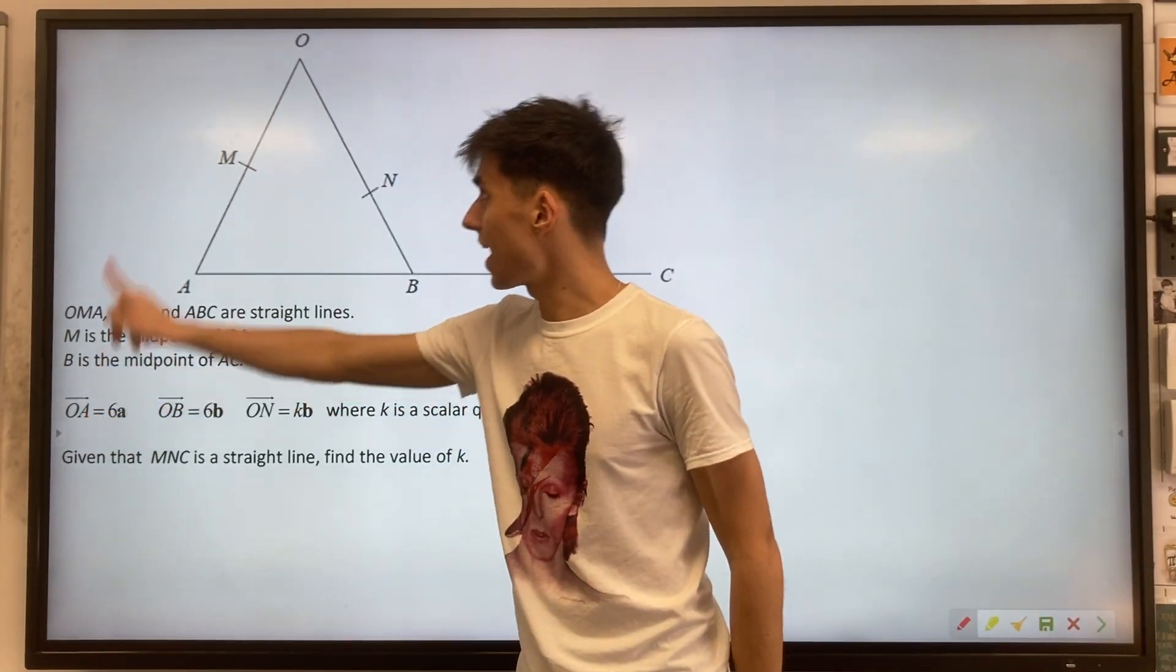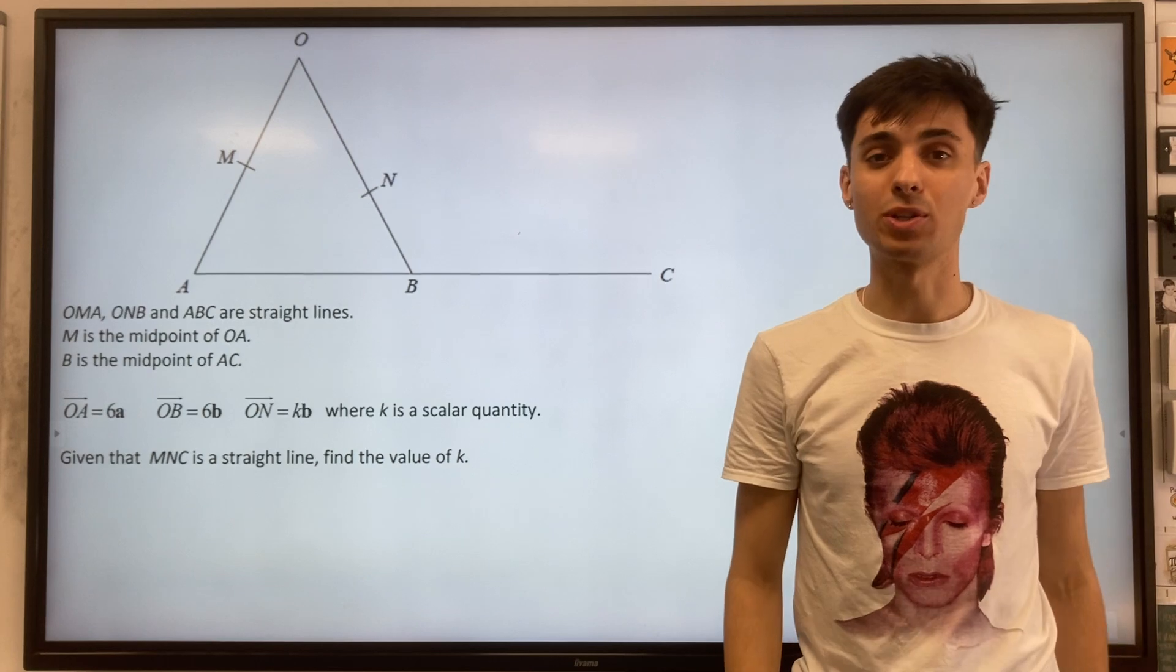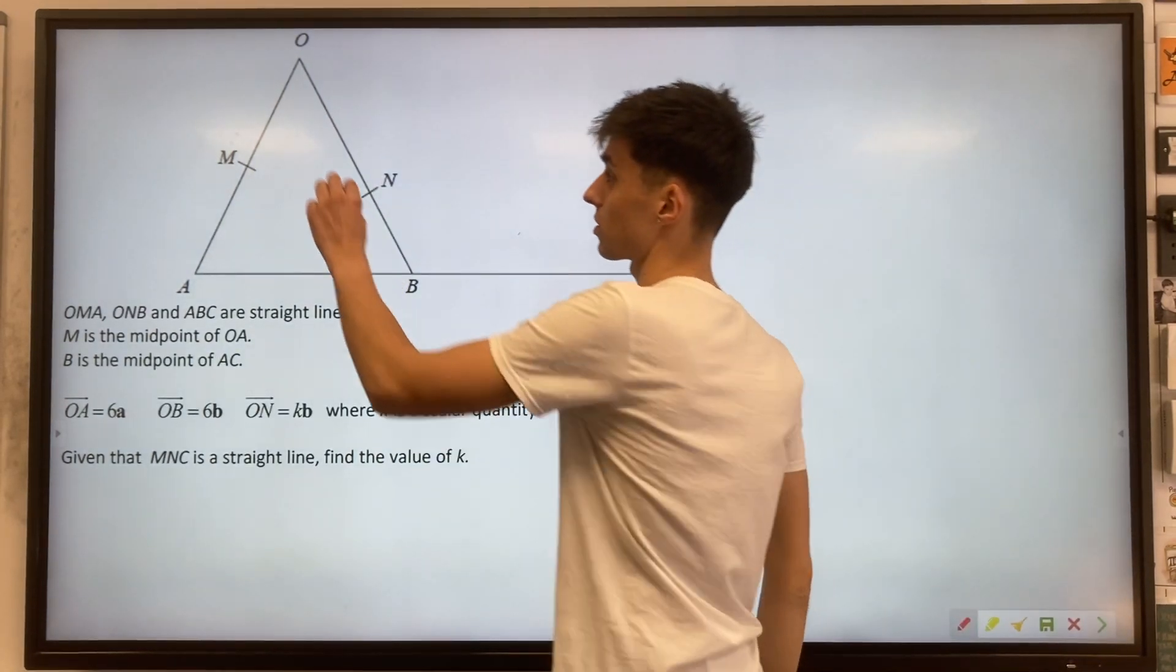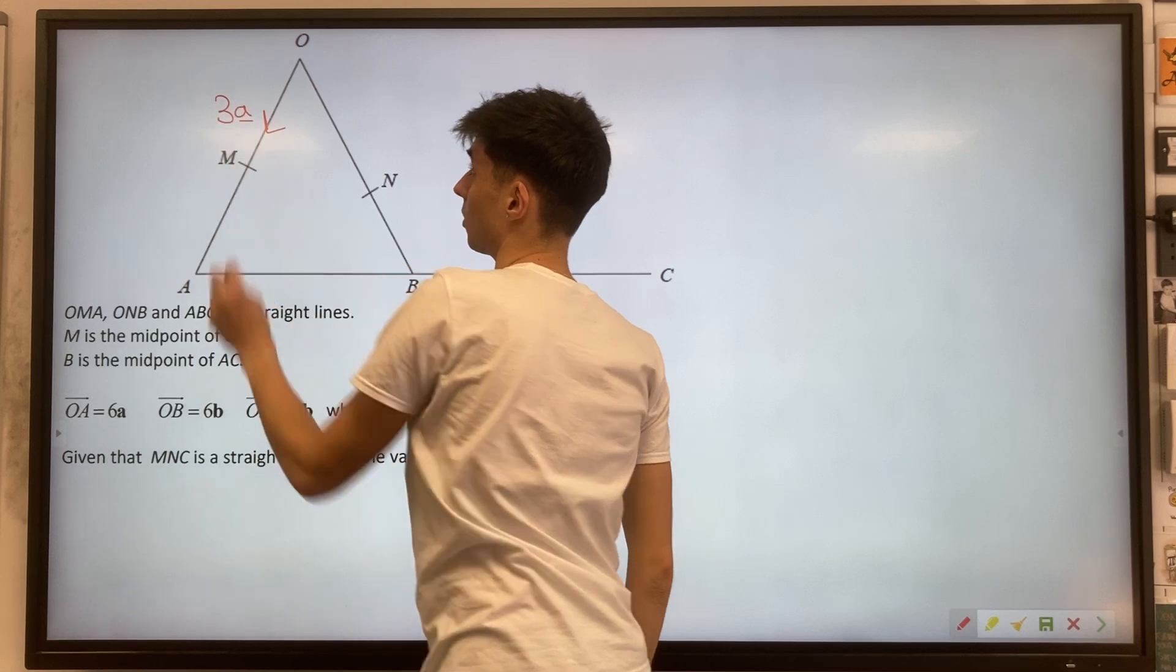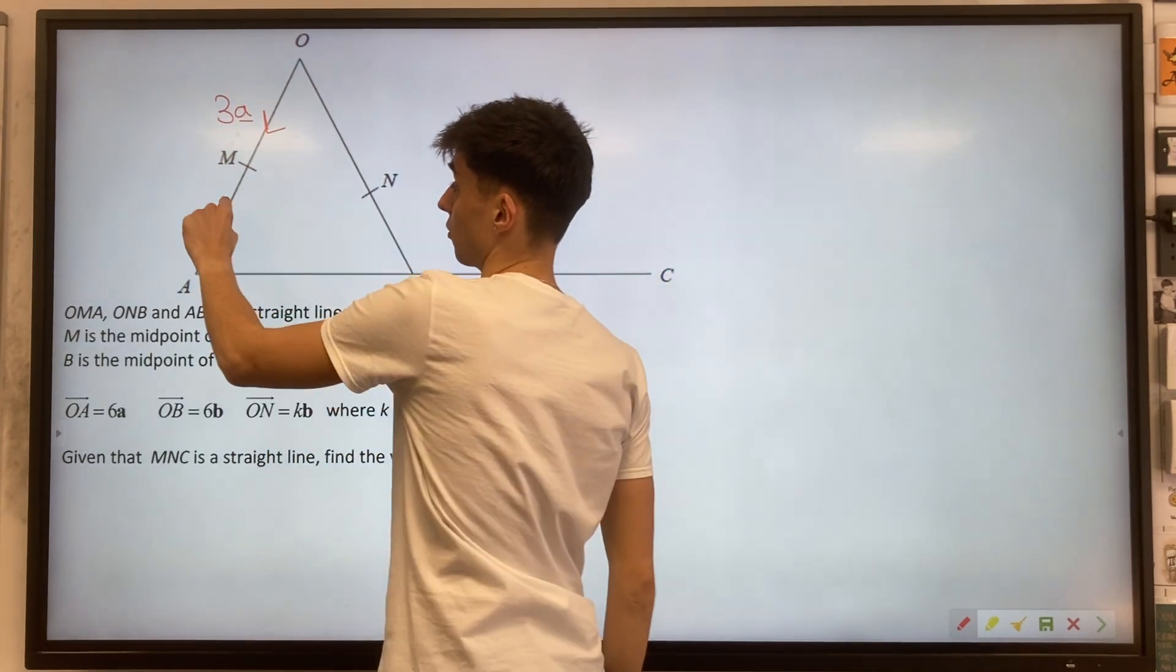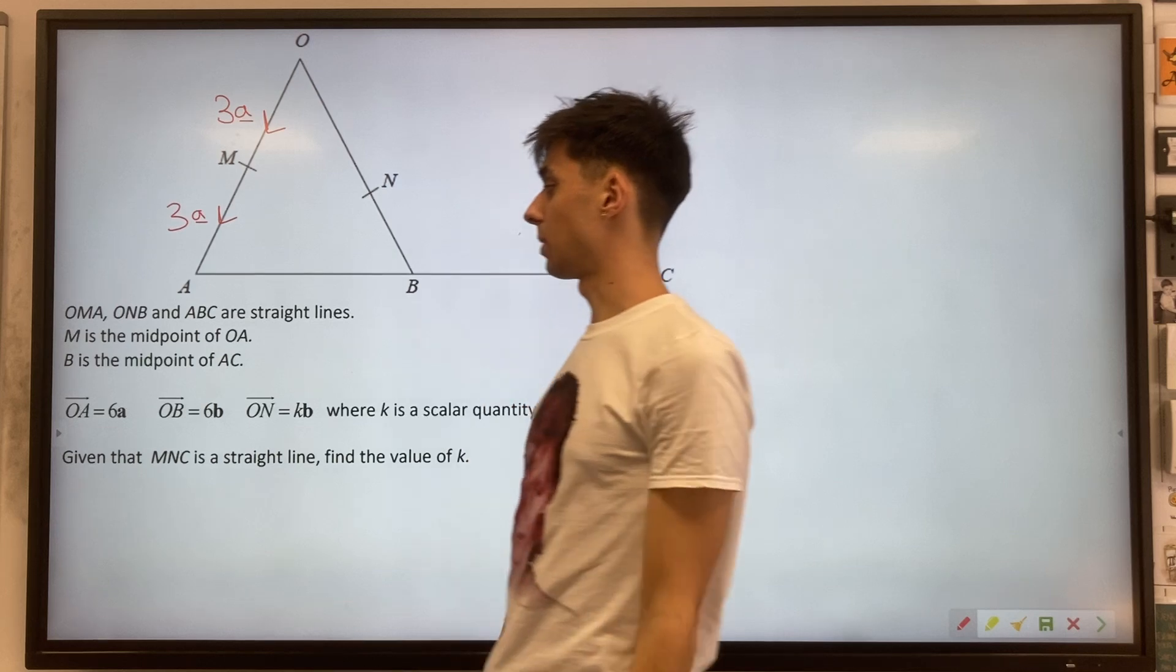We're given that OA is 6a, and M is the midpoint of OA. So we're going to draw this on the diagram as 3a from O to M, and then another 3a from M to A. This M is the midpoint.